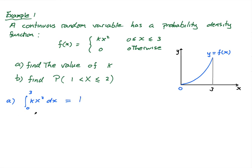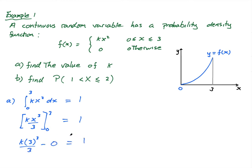Let's just do this. This is kx³/3 evaluated between 0 and 3, equals one. Substituting in 3: k times 3³ over 3, minus zero, equals one. That's 27k over 3, which is 9k equals one, so k equals one over nine. That's part A done — k is equal to one ninth.